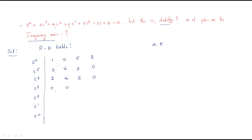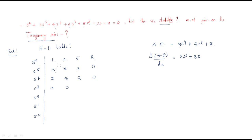The auxiliary equation is taken from the s⁴ row: 2s⁴ + 4s² + 2. We differentiate this auxiliary equation with respect to s, giving us 8s³ + 8s. These differentiated coefficients — 8 and 8 — replace the row of zeros in the s³ row.